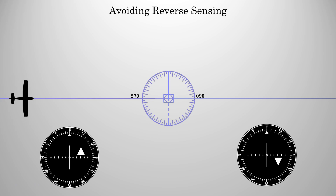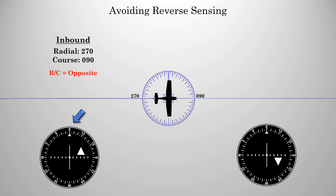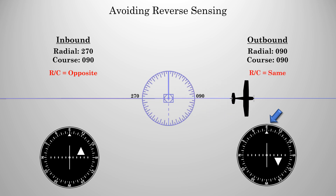So how can we avoid reverse sensing? Fortunately, G1000 aircraft don't have this problem, because they can use your GPS to confirm the location and correct your mistake. However, you don't want to rely on this, because you will fly a traditional VOR at some point in your career, and you definitely don't want to create a bad habit. There are a number of different ways to help you remember it, but this is my favorite. In this example, we're currently flying eastbound towards the VOR. We're on the 270 radial, and our course should be set to 090. When you're flying inbound to a VOR, your course and the radial you're on should be opposite. Inbound, opposite. Once we pass the VOR, we'll be flying outbound on the 090 radial, and our course will still be 090. When flying outbound, your course and the radial should be the same. Inbound opposite, outbound same.